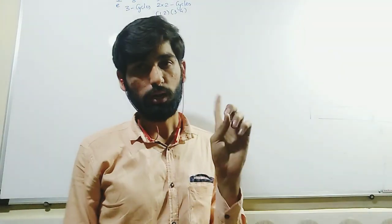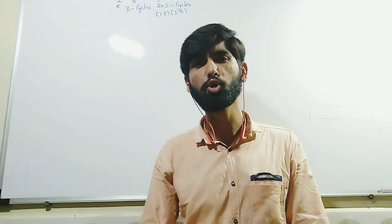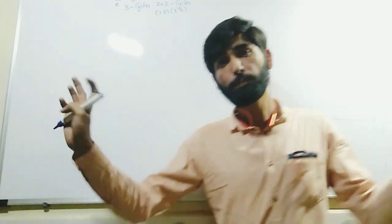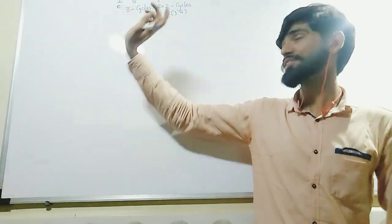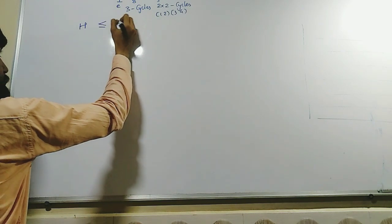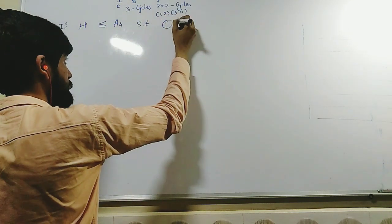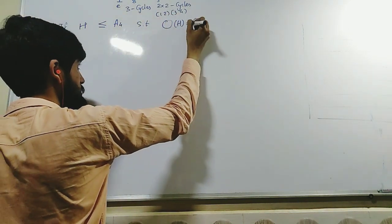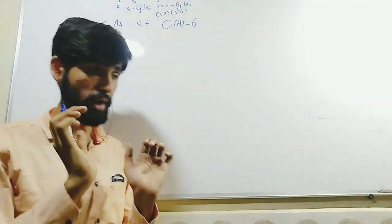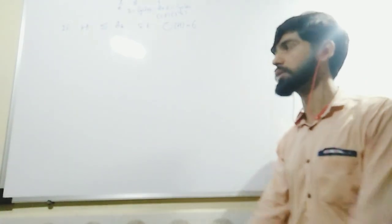A4 is a group of order 12 and we claim that this group of order 12 has no subgroup of order 6. Suppose by chance A4 has a subgroup of order 6. We are going with the contradiction — if H is a subgroup of order 6, then we should get some contradiction.